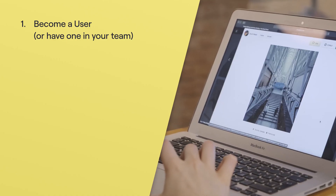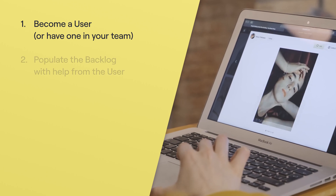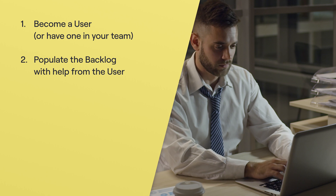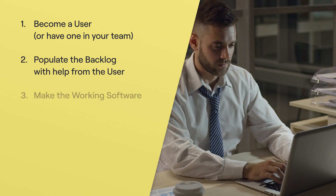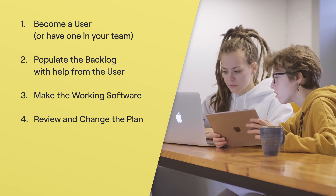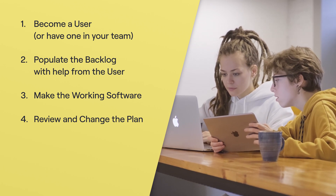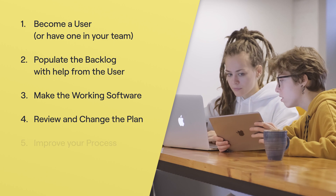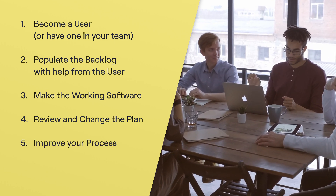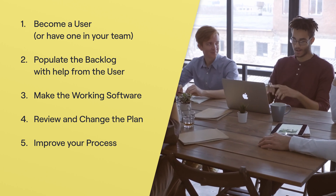There are five main steps to this process. The first one is that you should become a user, or at least have a user in your team. The second is to populate the backlog — the actual work you're going to do in the project — with the help of the user. Number three is the bread and butter of our craft: actual design and coding. Number four is a review, where we show the user what we've done. And number five is to improve your process so that next time you can do things better.